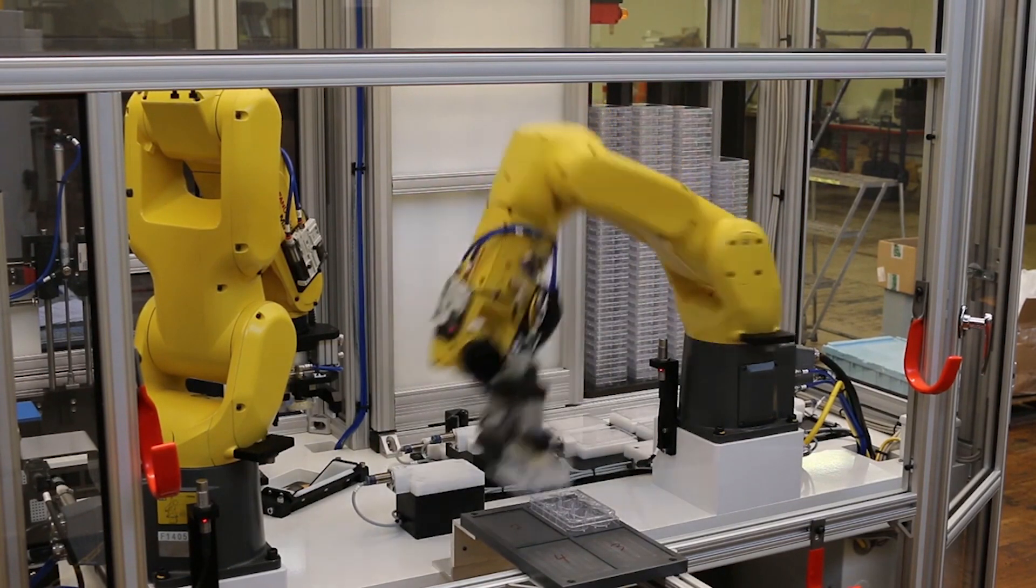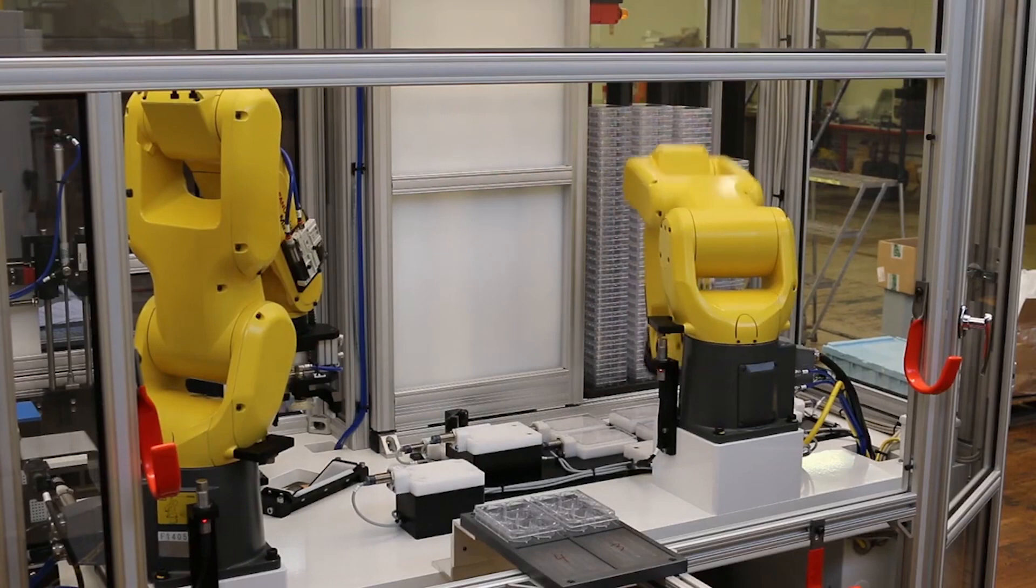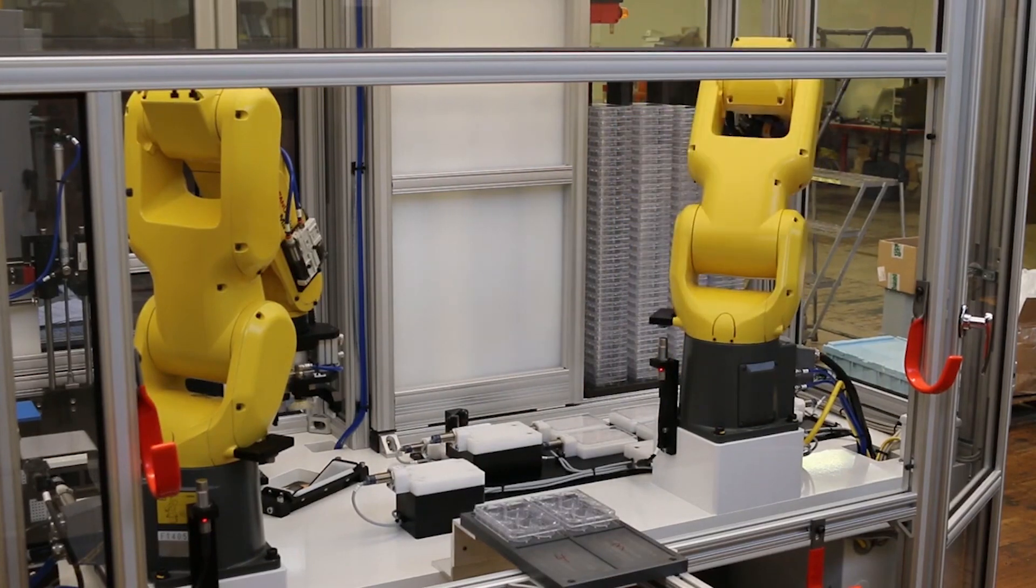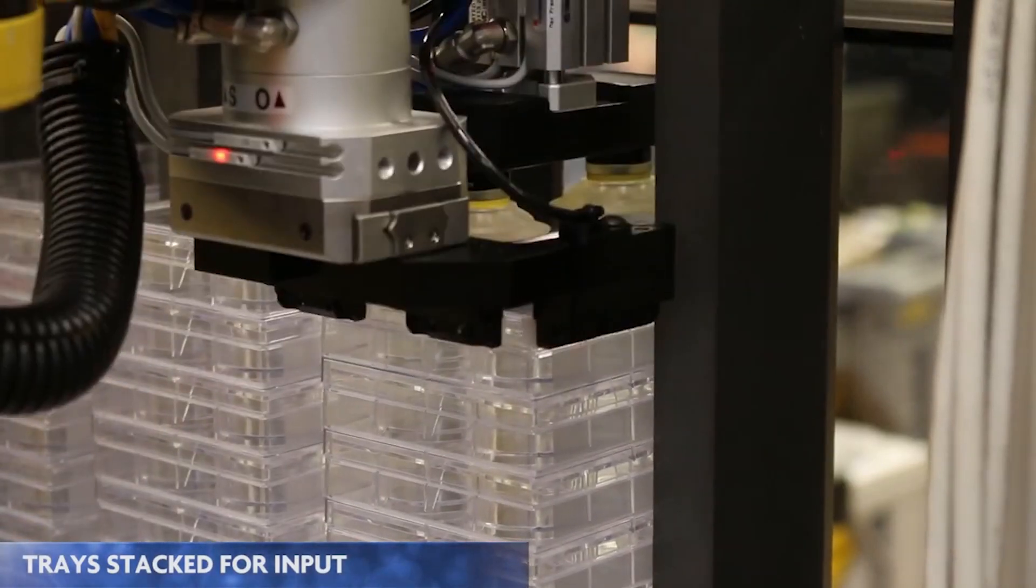A pair of fast and compact FANUC LR Mate 200iD robots are used to handle trays in the system. Trays that enter the system are stacked for input.